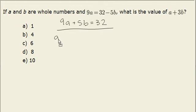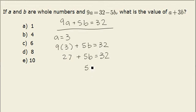I will try a equals 3, so substitute 3 in for a. 9 times 3 is 27, plus 5b equals 32. Subtract 27 from both sides to get 5b equals 5, which is divisible by 5. So b equals 1, and a equals 3.